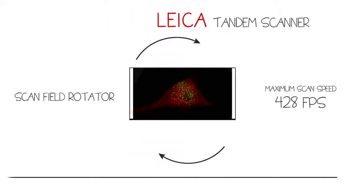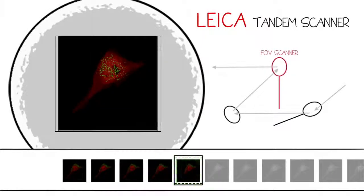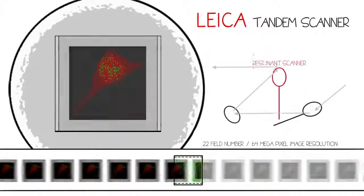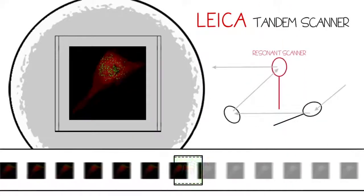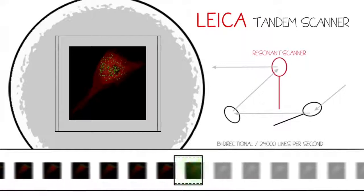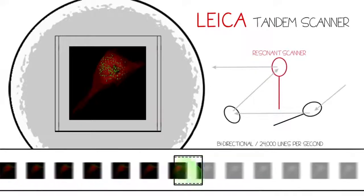allowing a maximum scan speed of 428 frames per second. The Leica TCS SP8 with tandem scanner allows you to choose between a large field of view and high speed for uncompromised imaging that adapts to every experiment.